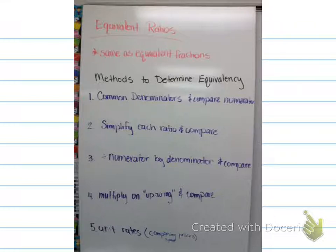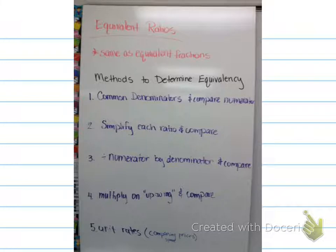Equivalent ratios are the same as equivalent fractions, and there are lots of different methods that we can use to figure out whether or not they are equivalent. We can use these methods that we talked about today to be able to solve for the missing pieces in the tables whenever we're finding equivalent ratios in a ratio table.